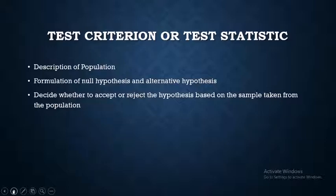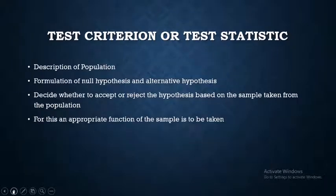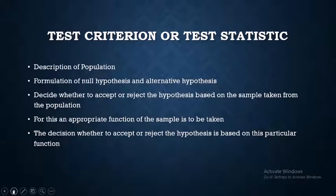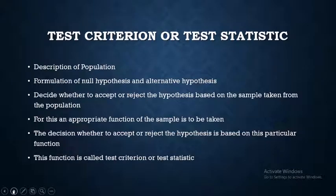After formulating the hypotheses, we have to decide either to accept or reject the null hypothesis based on a sample taken from the population. Since it is difficult to use the sample directly, we find an appropriate function of the sample observations, and the decision to accept or reject the hypothesis is based on this function.